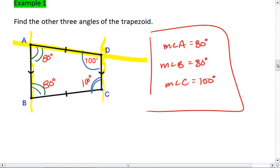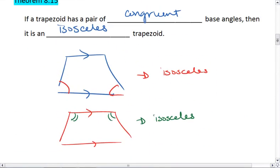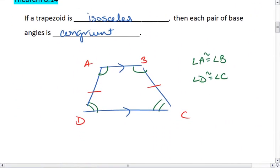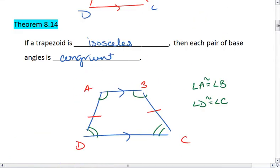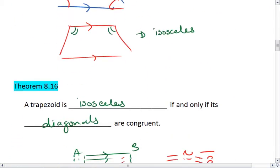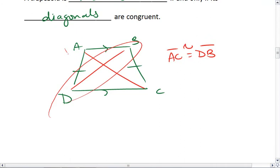If you understand the basics of trapezoids, and isosceles trapezoids, so isosceles trapezoids have three characteristics, well two really. The base angles, the pairs of base angles are congruent, and the diagonals are congruent.